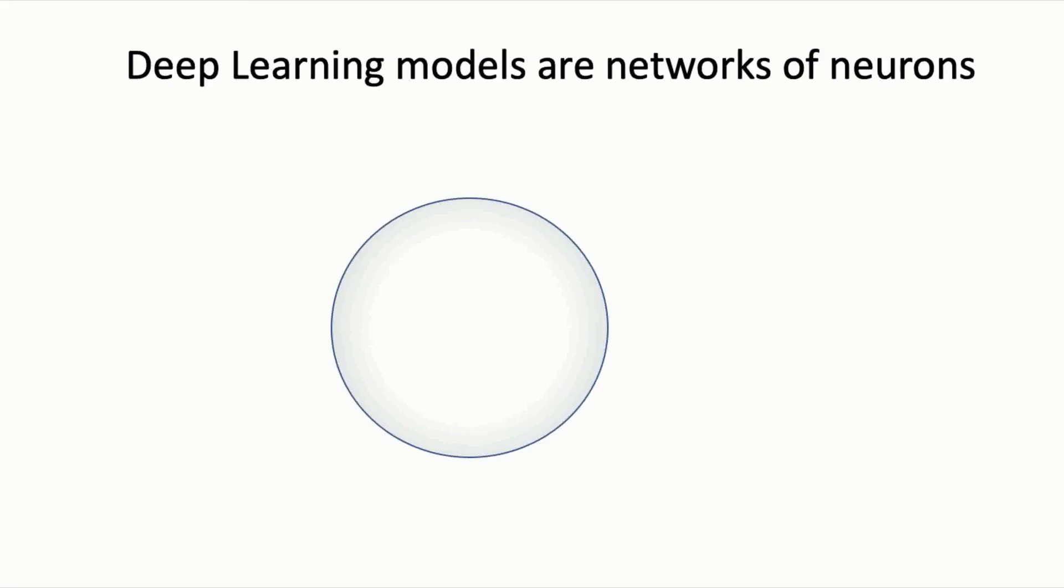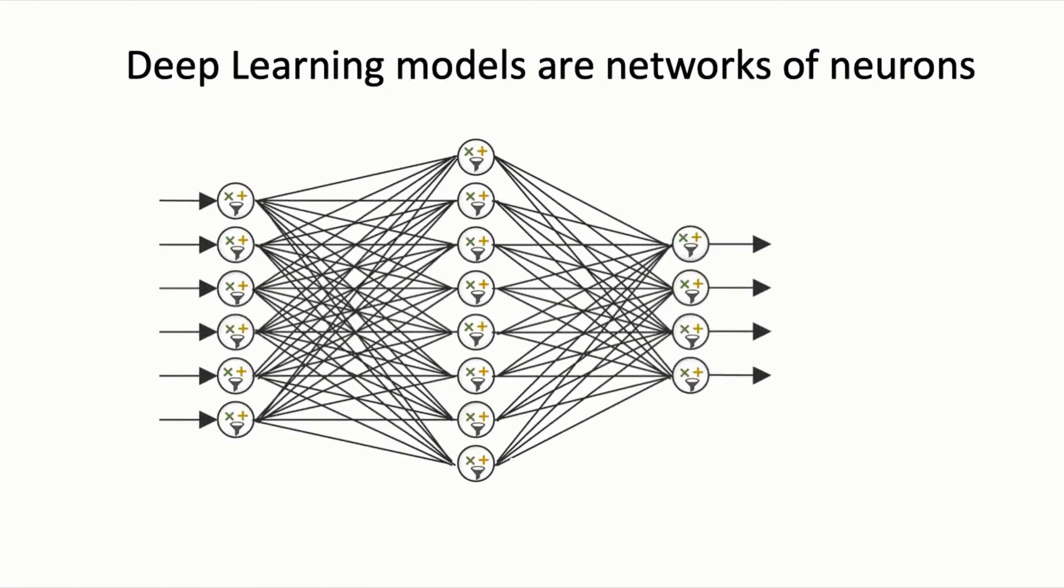Each neuron applies very simple computations to its inputs involving just multiplying, adding, and passing sums through simple filters. These simple computations of many individual neurons are coordinated into the combined computations of a large multi-neuron neural network.